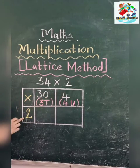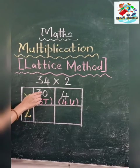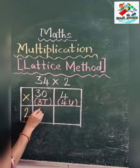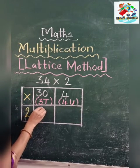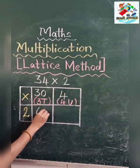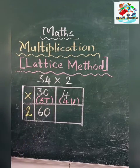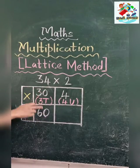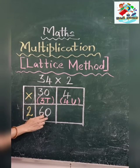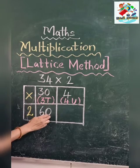Now what we have to do is see, 3 twos are 6, or you can say 2 threes are 6, and directly you can write 0. 3 twos are 6.